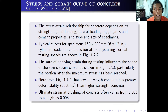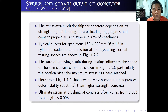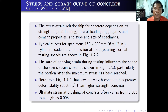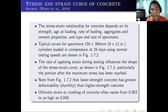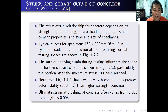We also need to study the stress and strain curve of concrete. When you put the concrete cylinder under the compression test, you can record the applied load and deformation so that you can draw the stress-strain relationship of the concrete. The stress-strain relationship for concrete depends on its strength, age of loading, rate of loading, aggregates and cement properties, and type and size of specimens. A typical curve for the 150 mm by 300 mm cylinder loaded in compression at 28 days using normal testing speeds is shown in Figure 1.7.2.